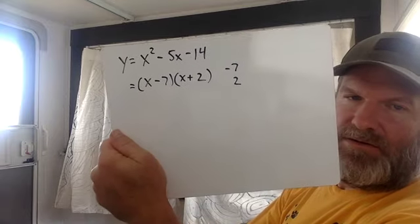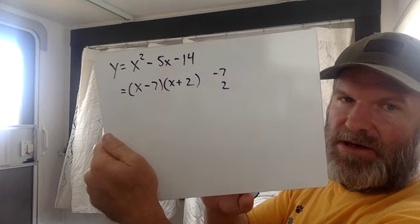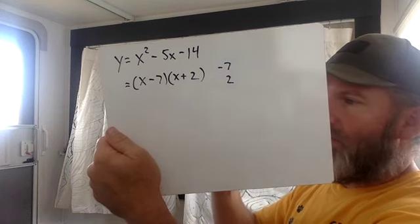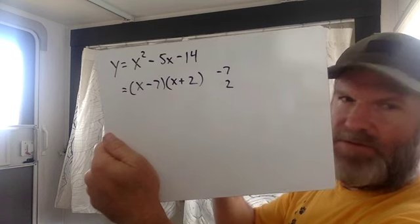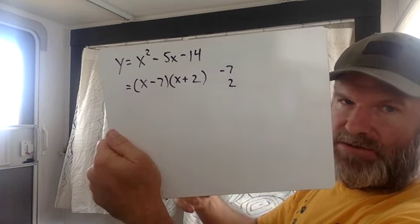Now it doesn't matter which parentheses you use first. I could have switched that around and said (x + 2) times (x - 7). Because you know, 3 times 4 is 12 and so is 4 times 3. When you're multiplying, the order doesn't matter.